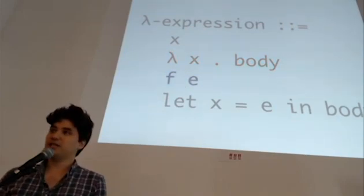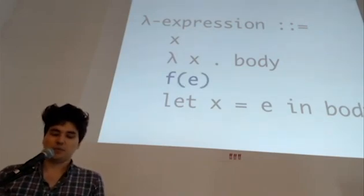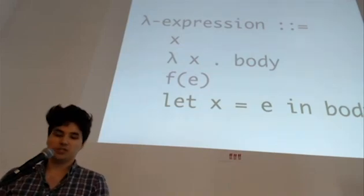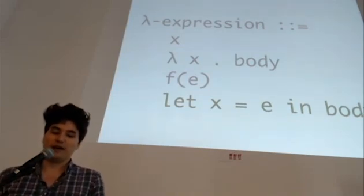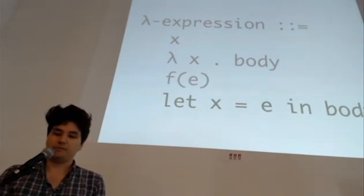There's four different kinds of terms in the language. The first one is variables. The second one is functions, which are defined with this lambda symbol and take a single argument, in this case named x, and have a body containing some other expression. The period here is just syntax to separate those two.